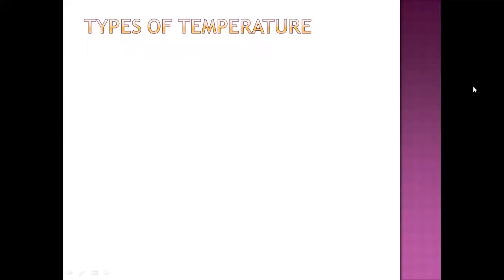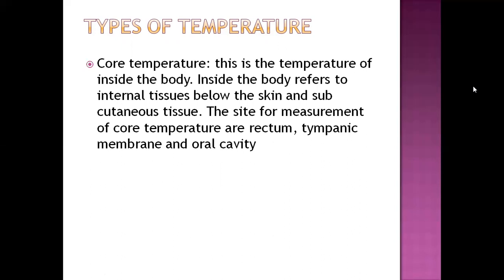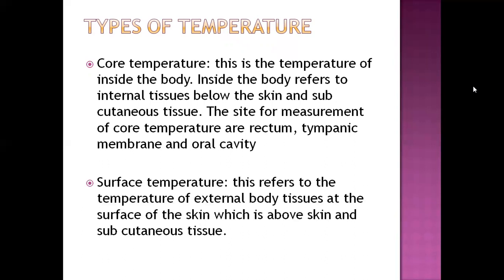Now we have types of temperature. Before discussing about fever, we need to know everything about body temperature. First is core temperature. Core means central — this is the temperature of the inside part of the body, including internal tissue, blood vessels, and subcutaneous tissue. Sites where we can measure core temperature are the rectum, tympanic membrane, and oral cavity. Next is surface temperature — the temperature of external body tissues at the surface of the skin, above the subcutaneous tissue.